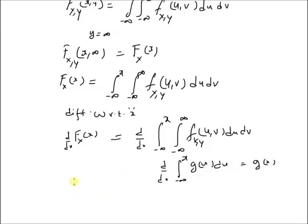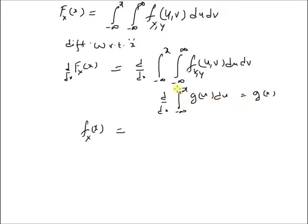Using this formula, this is equal to the marginal PDF f_x(x). By definition, this equals g(x), where g(u) is the integrand — that is, the integral from minus infinity to plus infinity of f_{x,y}(u, v) dv. Using this formula, we can rewrite this as the integral from minus infinity to plus infinity of f_{x,y}(x, v) dv. This is the definition of the marginal PDF.